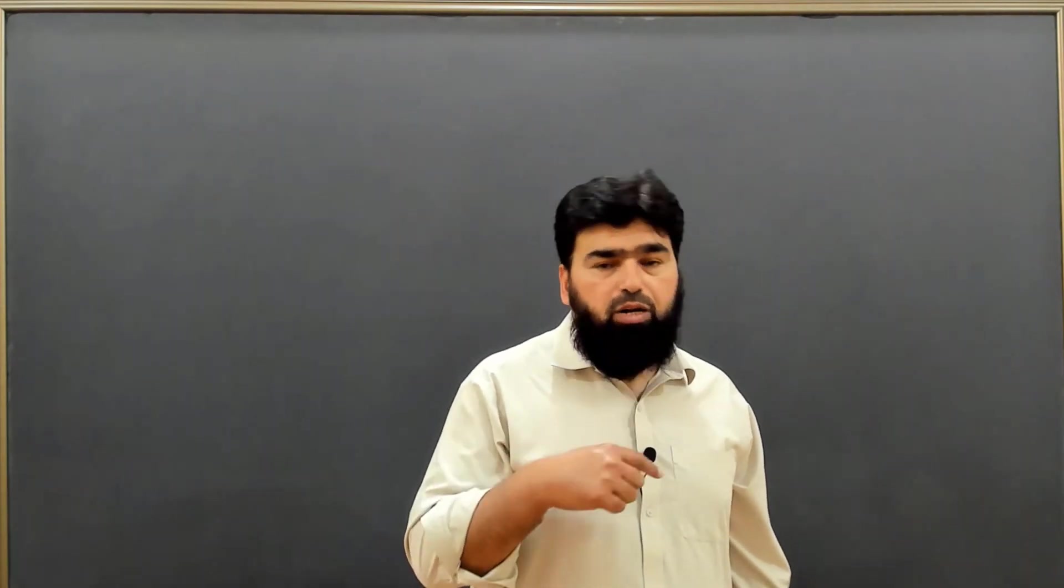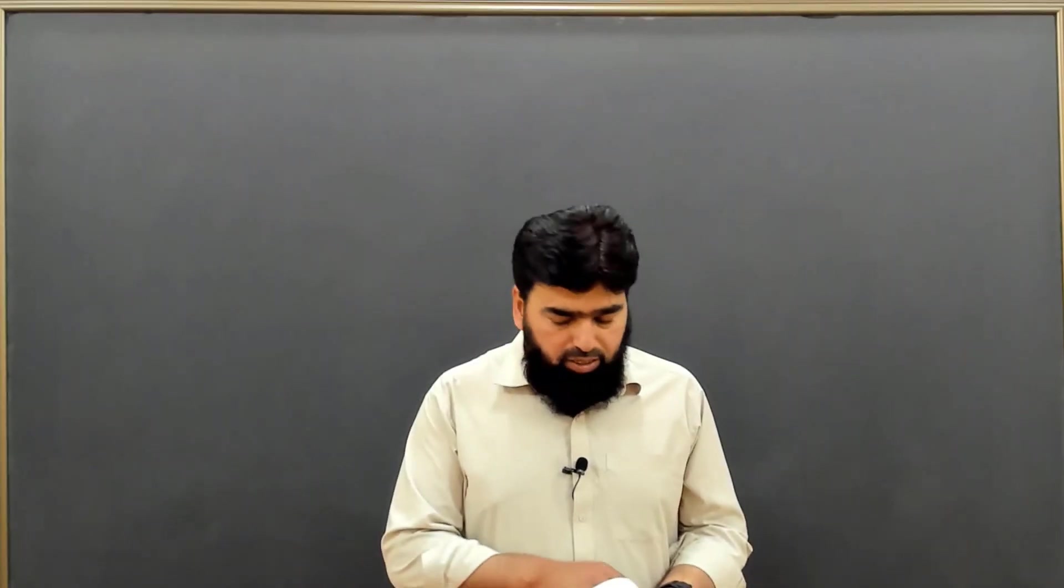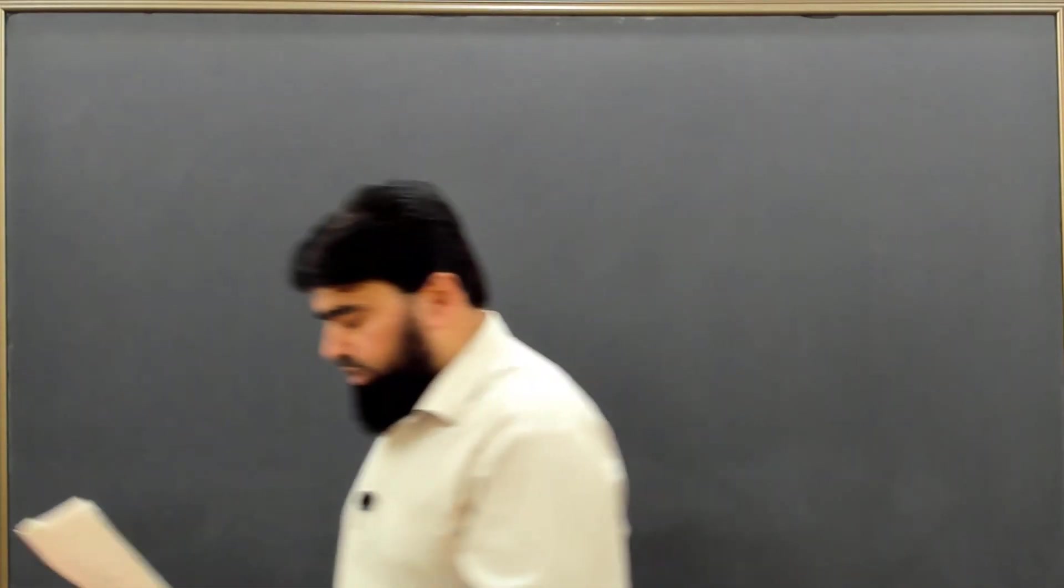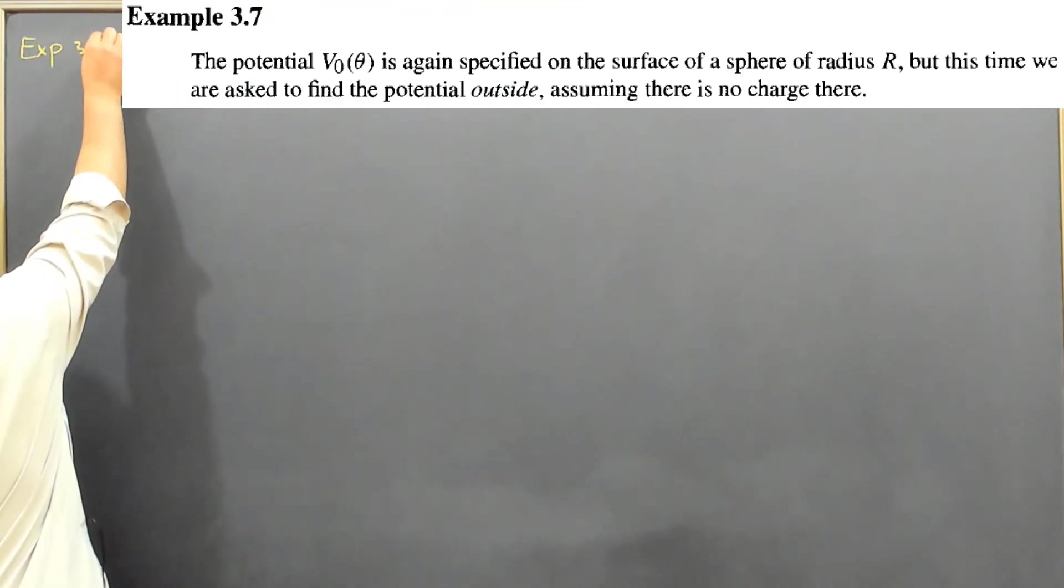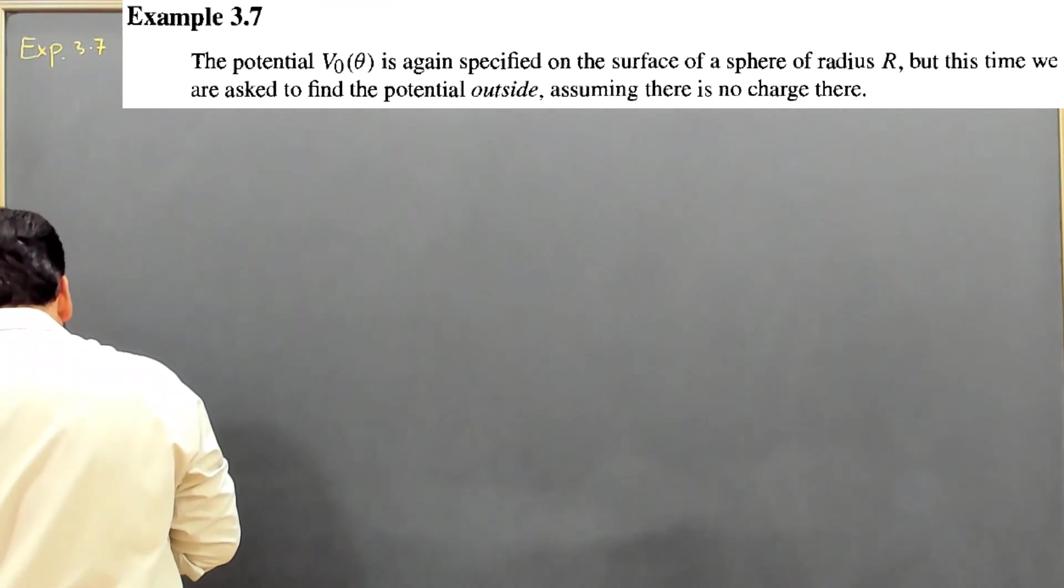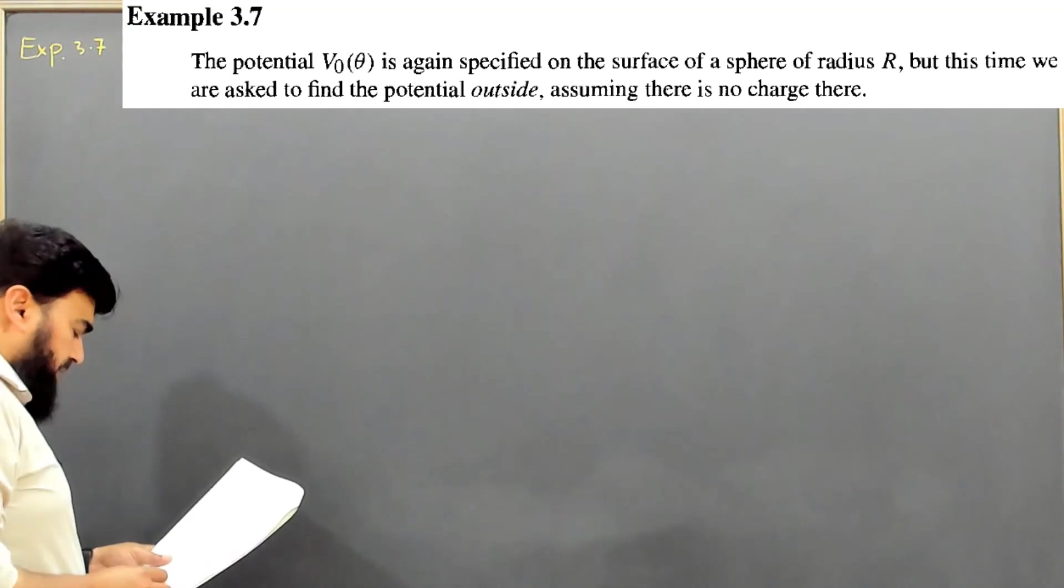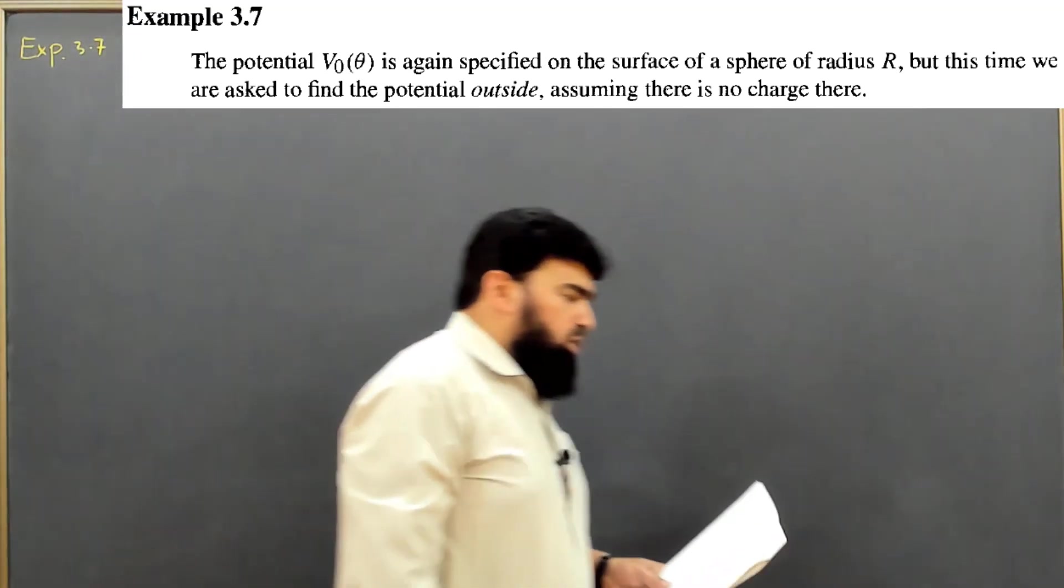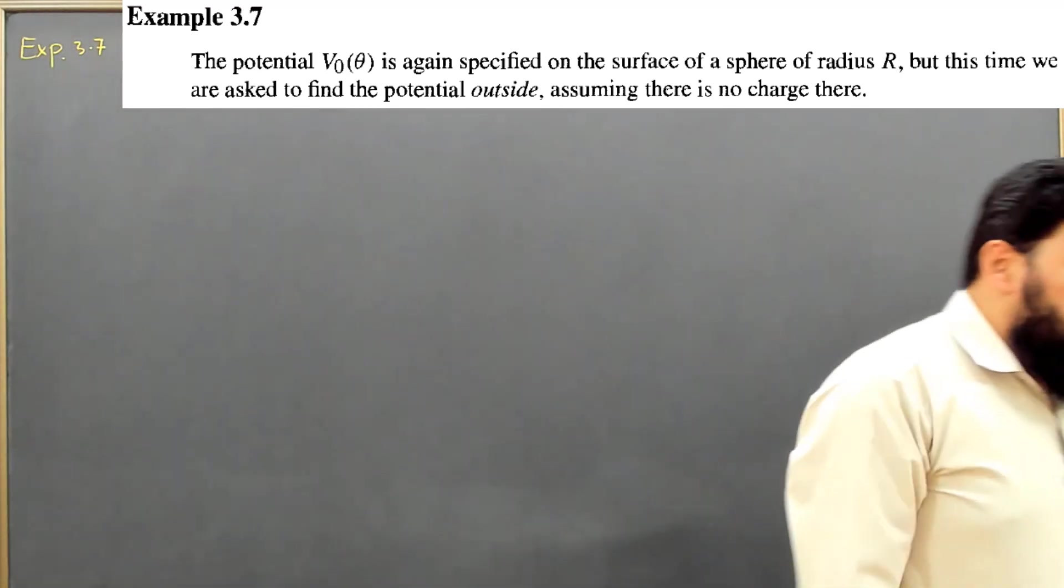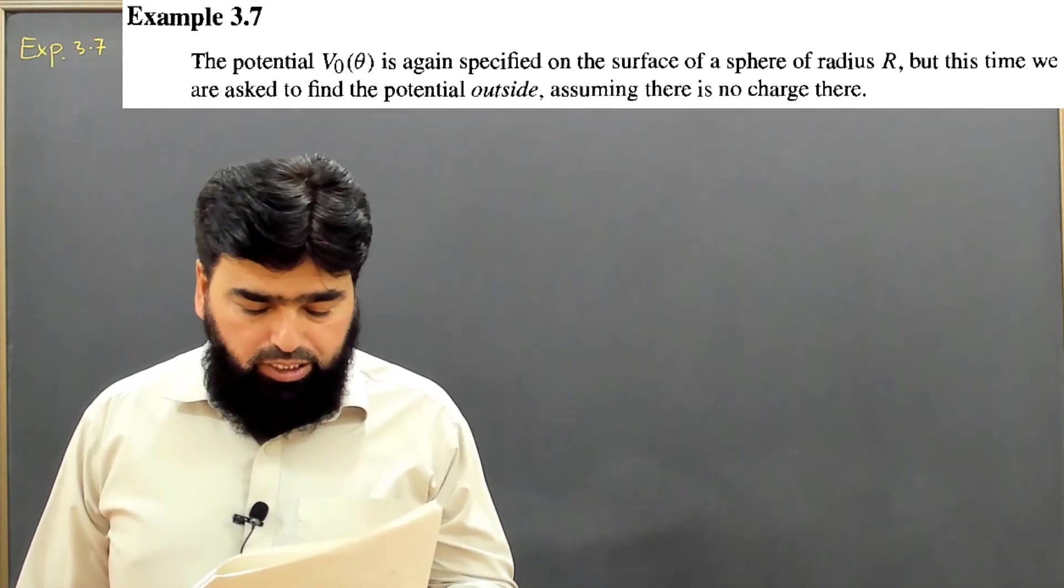While in example 3.7 we have the same geometry, but we are supposed to find the potential outside this sphere. So this example has many similarities with example 3.6.